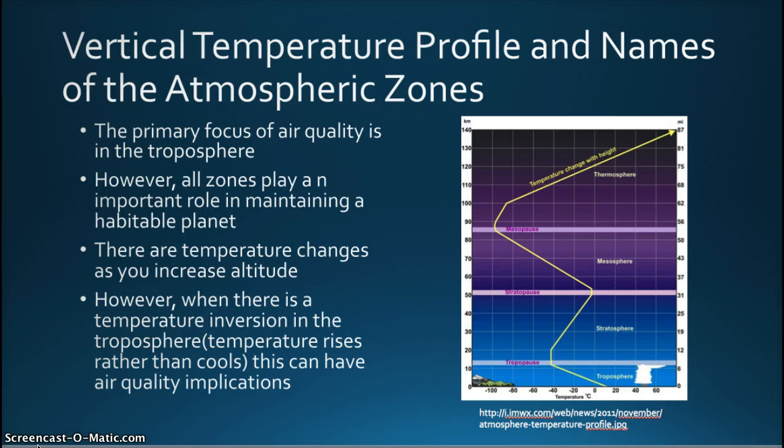Normally, in the troposphere, temperatures decrease with elevation. However, as we will study this term, there are times there is a reverse in the temperature-altitude relationship. This situation is a temperature inversion and can have implications with the movement of air, and it is especially troublesome if there are pollutants trapped in the air.